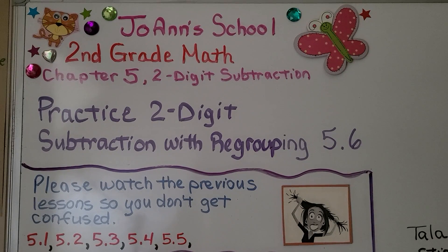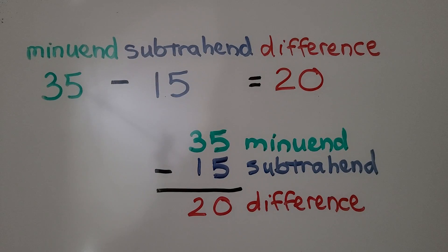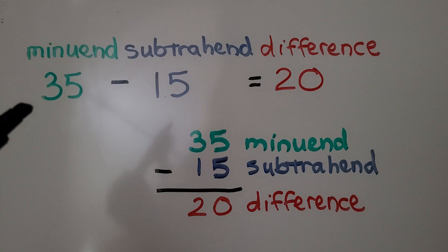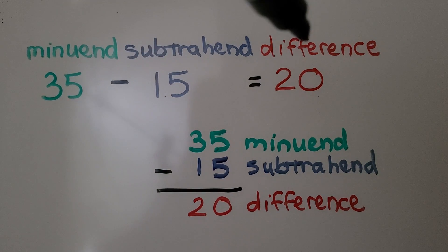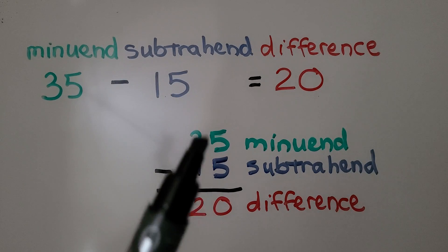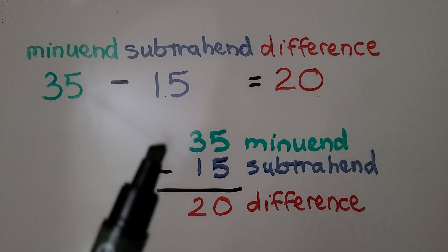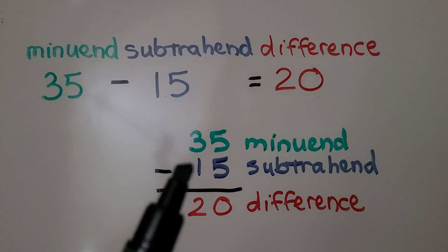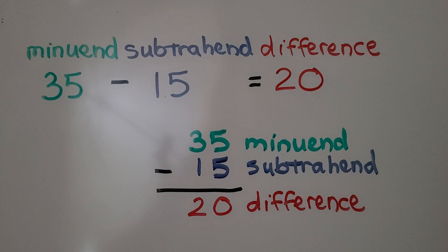Lesson 5.6 Practice: Two-Digit Subtraction with Regrouping. Before we begin, I want to remind you that in subtraction, the first number is the minuend, the next one is the subtrahend, and then we have the answer, the difference. And when it's written as a standard algorithm, the top number is the minuend, we're taking away the subtrahend, and the answer is the difference.